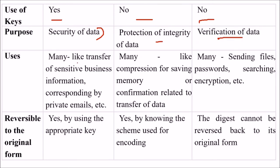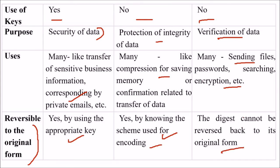Encryption is used for transfers of sensitive business information or private emails. Encoding is used for compression to save memory or for confirmation related to transfer of data. Hashing is used for sending files, passwords, and searching. Reversibility: encryption is reversible to the original form by using the appropriate key; encoding is reversible by knowing the scheme used; and in hashing, the digest cannot be reversed back to its original form.